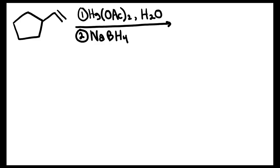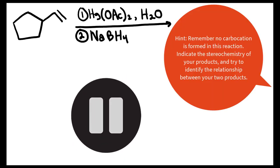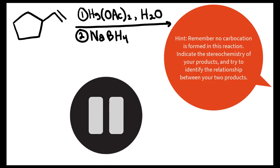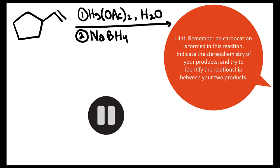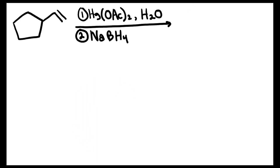Here we have another example of oxymercuration-demercuration. The first thing to recognize is why this is oxymercuration-demercuration: we've got our double bond or alkene reacting with the same set of reagents — the mercury, the water, and the sodium borohydride.